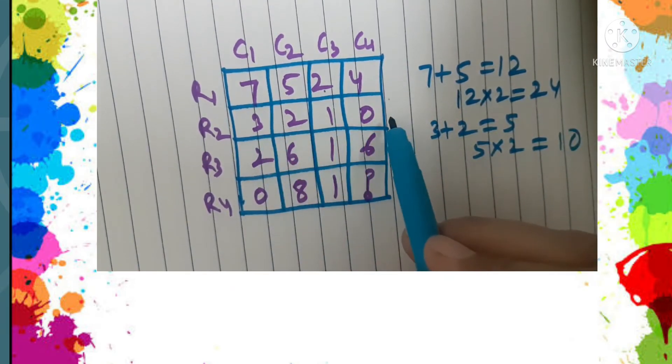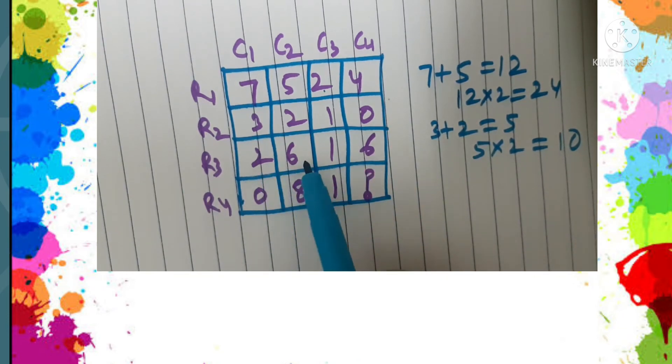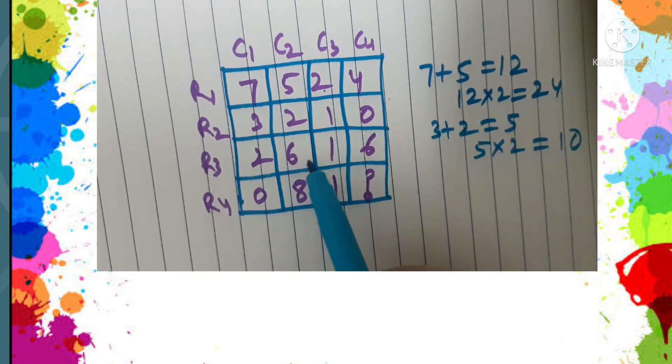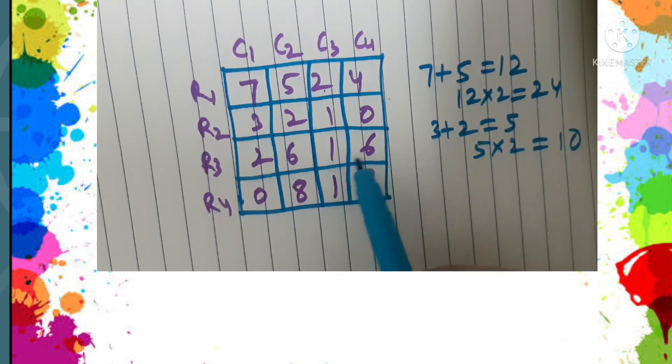So three, two, one, zero. Similarly, two plus six, two plus six is eight, and eight into two is sixteen.